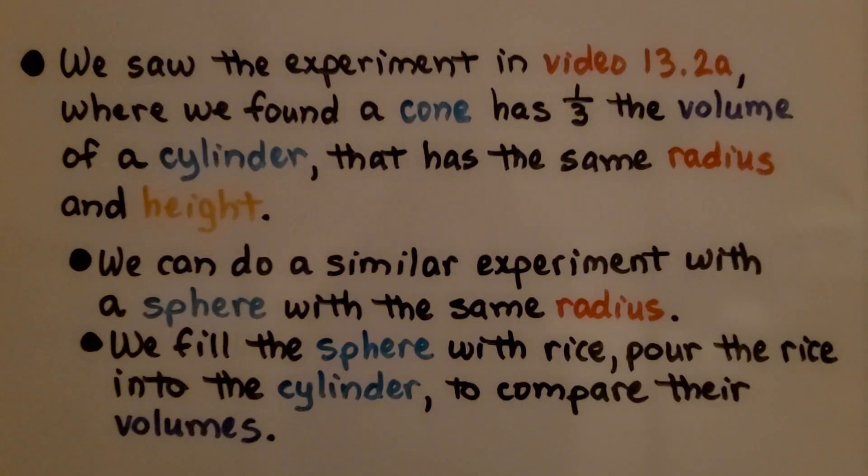We saw the experiment in video 13.2a where we found a cone has one-third the volume of a cylinder that has the same radius and height. We can do a similar experiment with a sphere with the same radius. We fill the sphere with rice, pour the rice into the cylinder to compare their volumes.